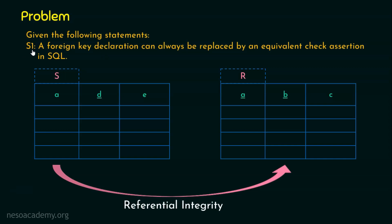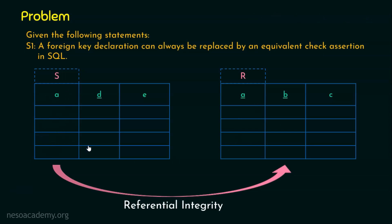There's one more important fact: check cannot handle cascade operations. For example, if we delete a value from the parent table, the corresponding values in the child table should also be deleted. This cascade behavior is possible with a foreign key declaration but is definitely not possible with a check constraint. Therefore, Statement 1 is false.